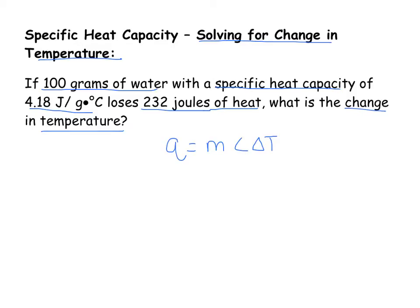So if 100 grams of water, our mass is going to be 100 grams, with a specific heat capacity of 4.18, so we're going to put that in, 4.18 joules per gram degrees Celsius.